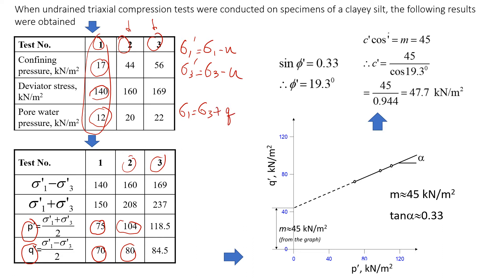For the first test we have confining pressure was 17 and the deviator stress was 140. So it will give us 157. I'm just going to write kilopascals. So this is sigma 1.